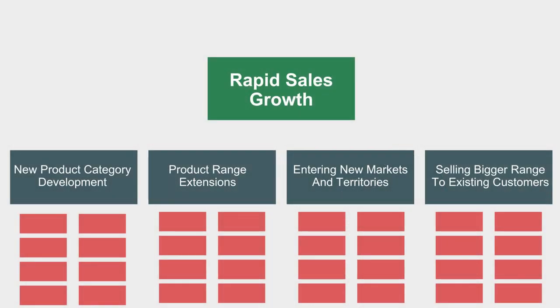For example, your business strategy might be rapid sales growth. The KRAs might include four key areas: firstly, new product category development; secondly, product range extensions; third, entering new markets and territories; and fourth, selling a bigger range of current products to existing customers. Then you would create specific objectives and goals within each of these categories.